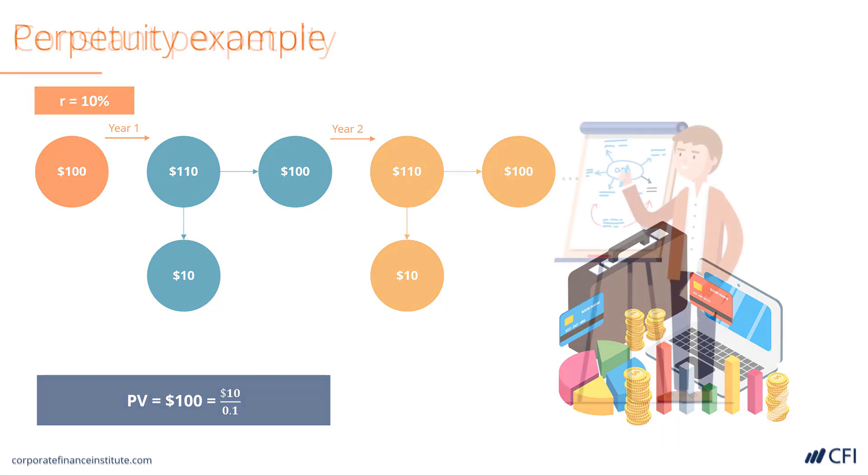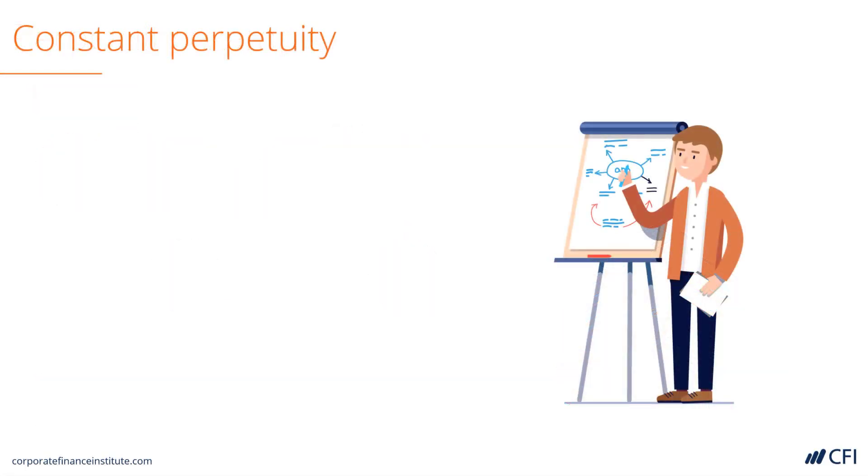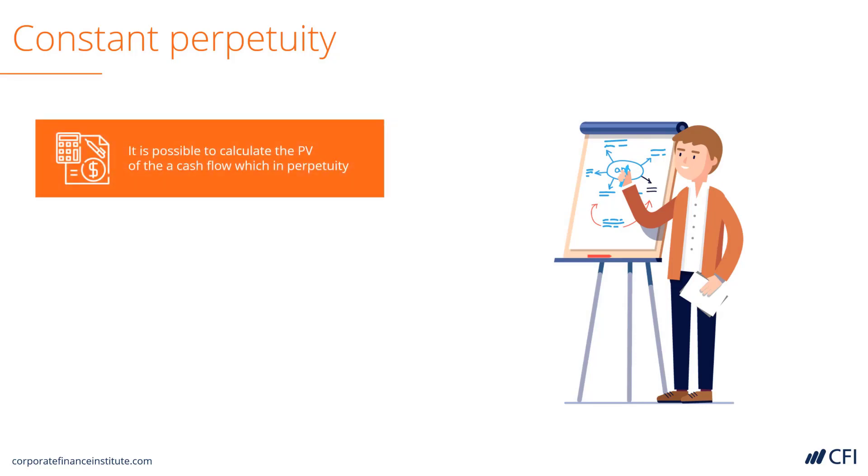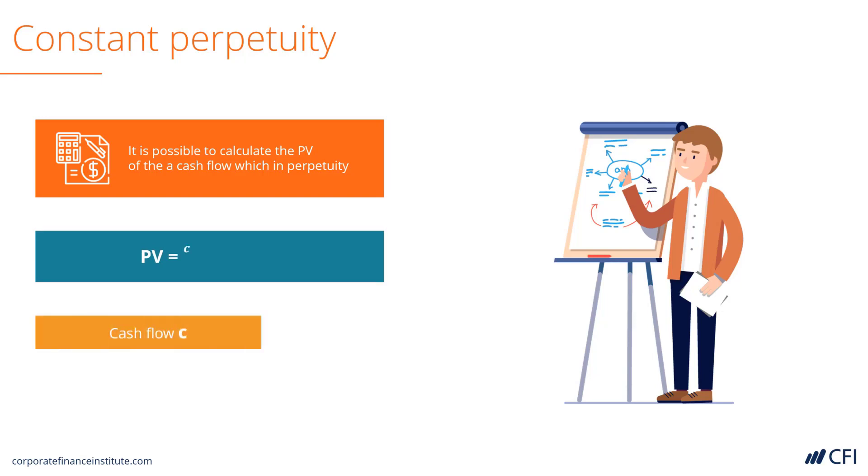From our example we can see that it is possible to calculate the present value of a cash flow which will occur in perpetuity. The present value of a constant perpetuity is the payment we are to receive into perpetuity divided by the discount rate, or the required rate of return. Using the figures from our previous example, you can see that this formula gives us the same present value of $100.